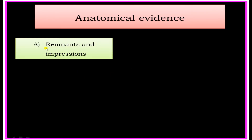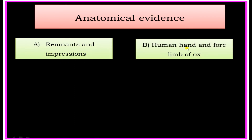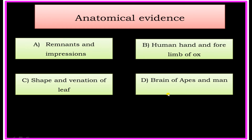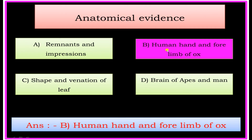Anatomical Evidence. Options: A) Remnants and Impressions, B) Human Hand and Forelimbs of Ox, C) Shapes and Venations of Leaves, D) Brain of Apes and Man. The answer is: Human Hand and Forelimbs of Ox.